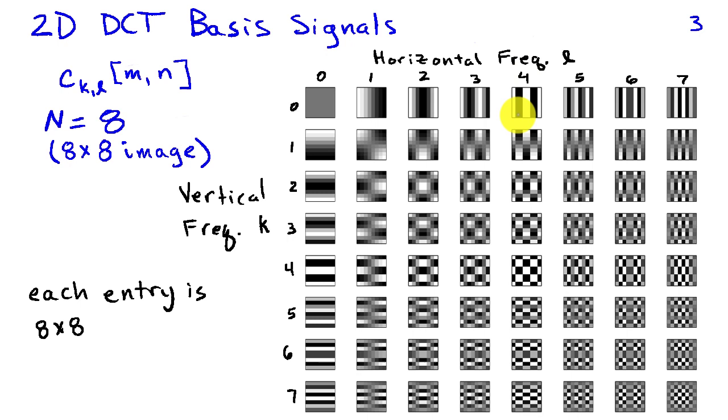So, for example, the basis image associated with k equals 5 and l equals 2 is circled in green.